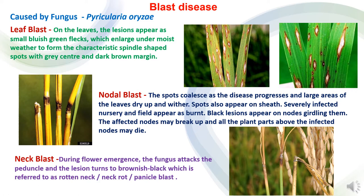Second is nodal blast. When the disease progresses, the spots merge with each other and cover a large area of the leaves, making them dry up and wither. The affected nodes become weak and may break. Above the nodes, the plant parts may die in severe conditions.